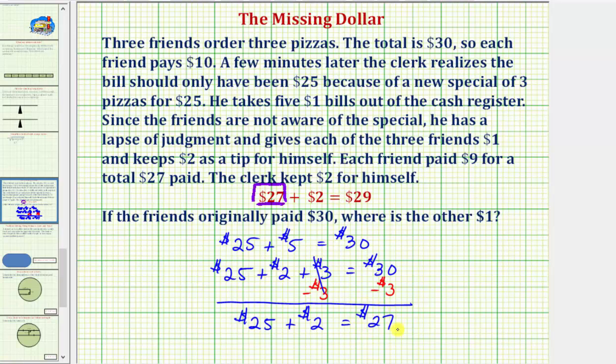Again, $27 was paid, $25 was for the pizza, and unknowingly, $2 went to the clerk.